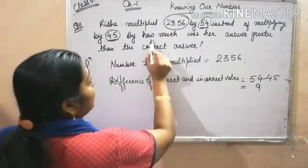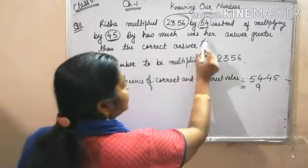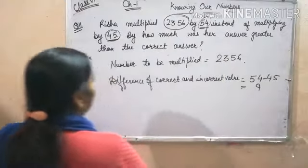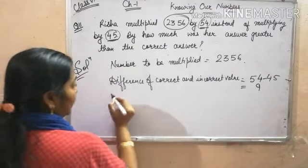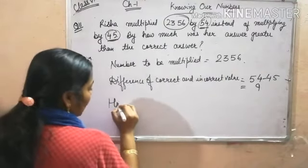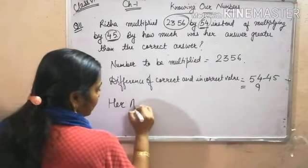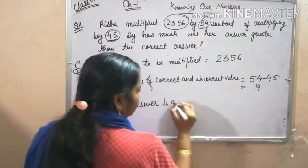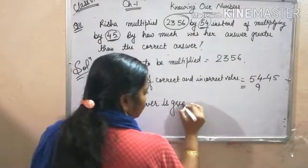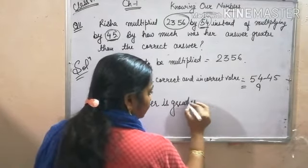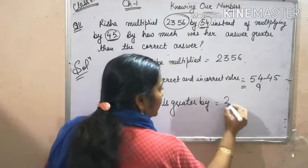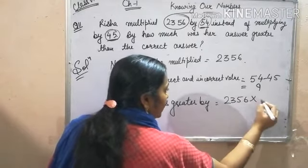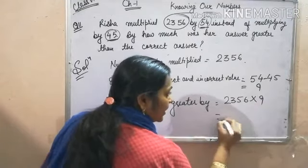Now what is being asked? By how much was her answer greater than the correct answer? Her answer is greater by 2356 multiplied by 9.